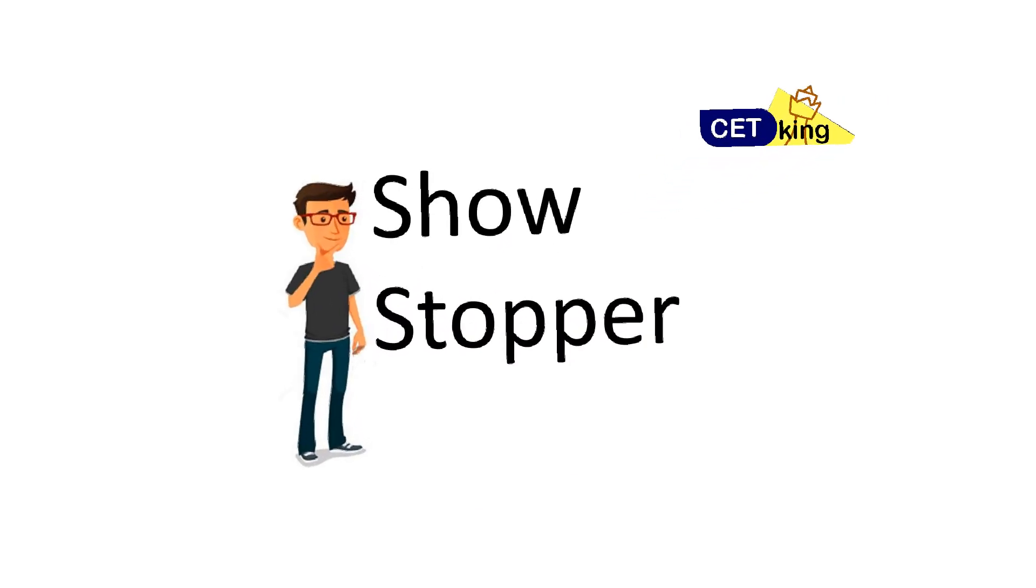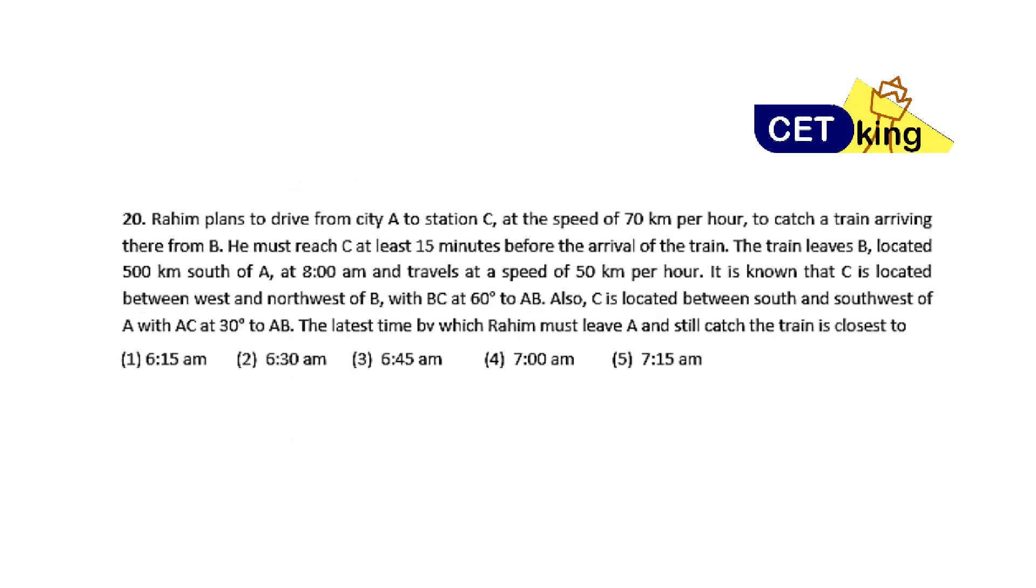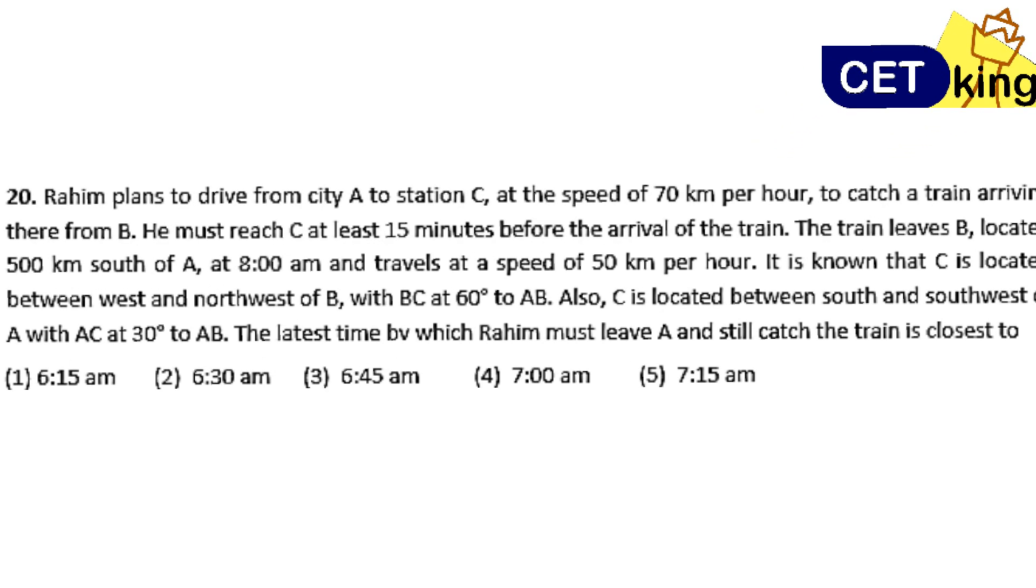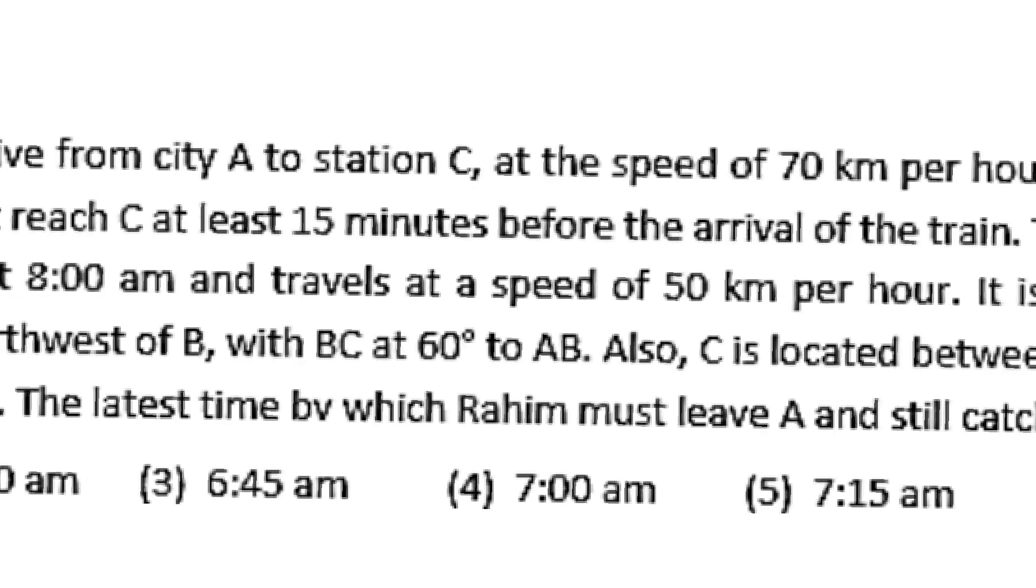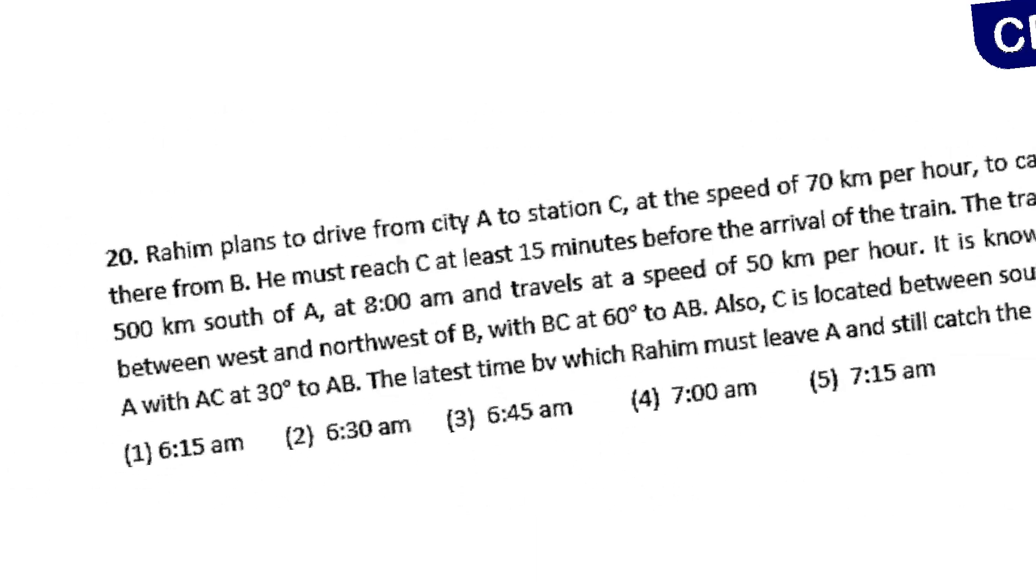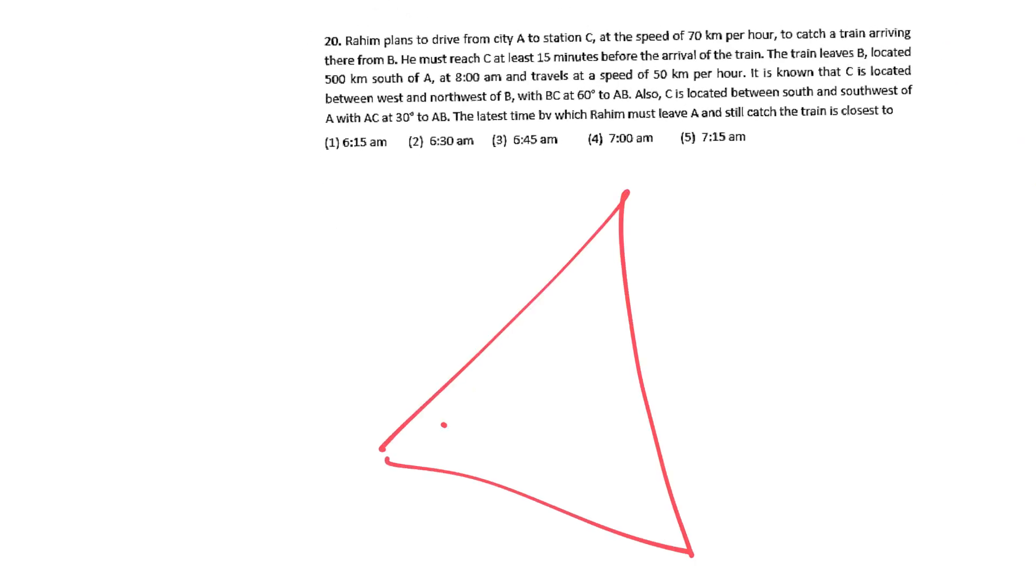Now come the last part which is showstopper. The questions which are there just to waste your time or just to avoid them. Showstopper does not mean the question which you cannot solve because you don't know the topic. That's your problem. Please pause the video and look at this question. This is taken from the CAT 2008 paper. This is basically a time, speed, distance and trigonometric question. Trains coming from here, they meet at this point. 30, 60, 90 degree triangle. I can solve this question, but the time which I am going to waste is minimum 5 minutes. These are typical showstopper questions.